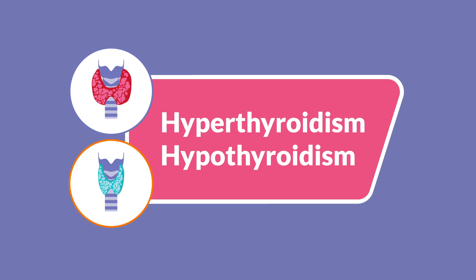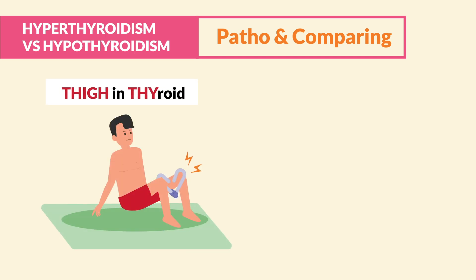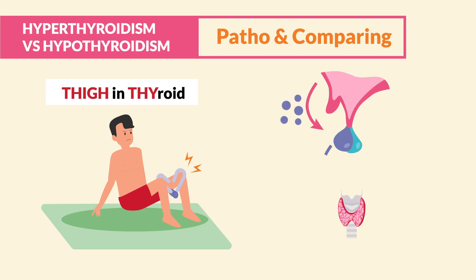Let's dive into a brief patho of what causes these conditions and then take a look at the signs and symptoms of each and how to treat them safely. The easiest way to think about the thyroid is to let the name help you. The 'thigh' in thyroid is like a thigh master using a lot of energy and metabolism. The thyroid generates energy and controls metabolism in the body by releasing hormones in a big game of telephone or dominoes.